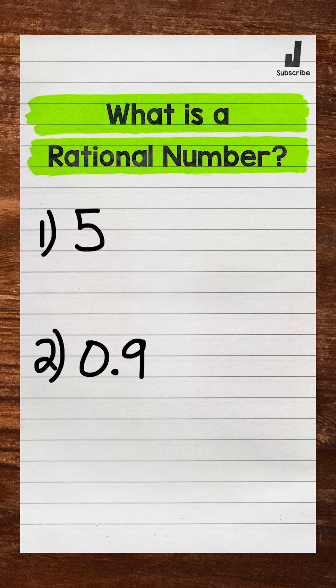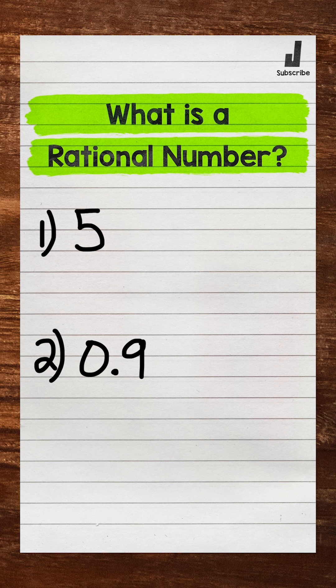This is Math with Mr. J. Let's take a look at rational numbers. Rational numbers are numbers that can be written as a fraction of two integers, or if something's in decimal form and it either terminates or repeats, it's rational.